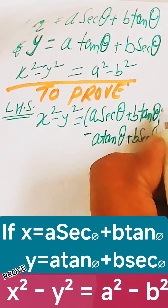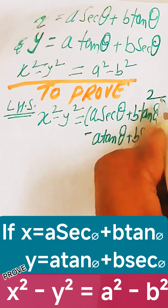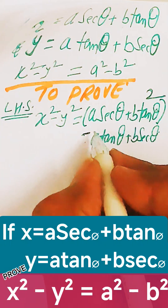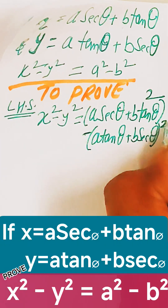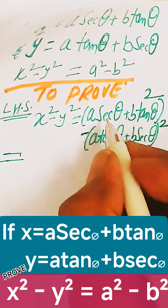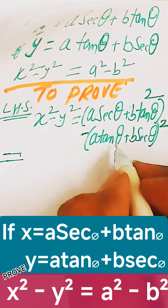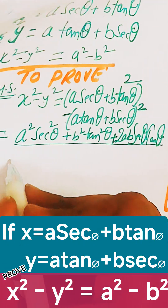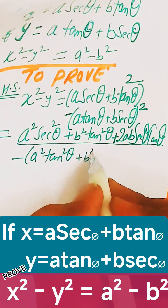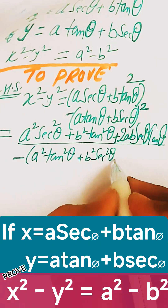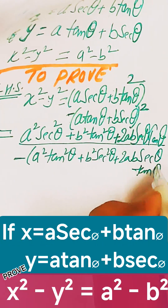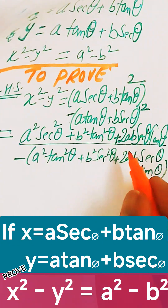Substitute the values: x² = (a·sec θ + b·tan θ)², minus y² = (a·tan θ + b·sec θ)². Expand each using the formula (x + y)² = x² + y² + 2xy. This gives a²·sec²θ + b²·tan²θ + 2ab·sec θ·tan θ, minus a²·tan²θ + b²·sec²θ + 2ab·sec θ·tan θ.